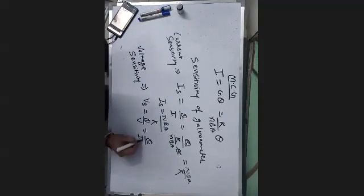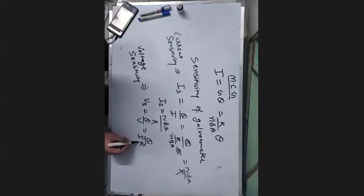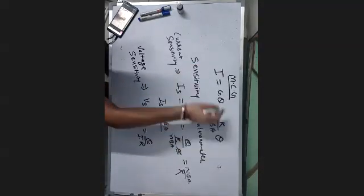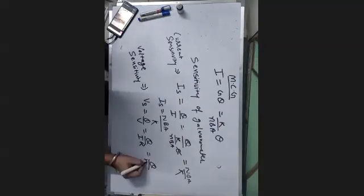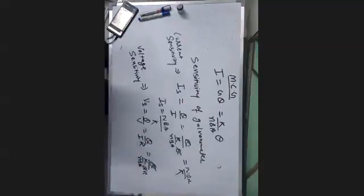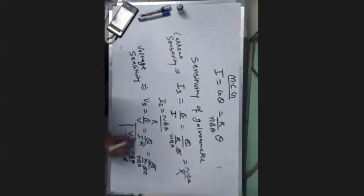Since V equals IR, we write Vs equal to theta by IR. Substituting the value of I from the current sensitivity expression, we get theta times k upon NBA into R, then theta cancels out, giving the voltage sensitivity formula as NBA by kR.